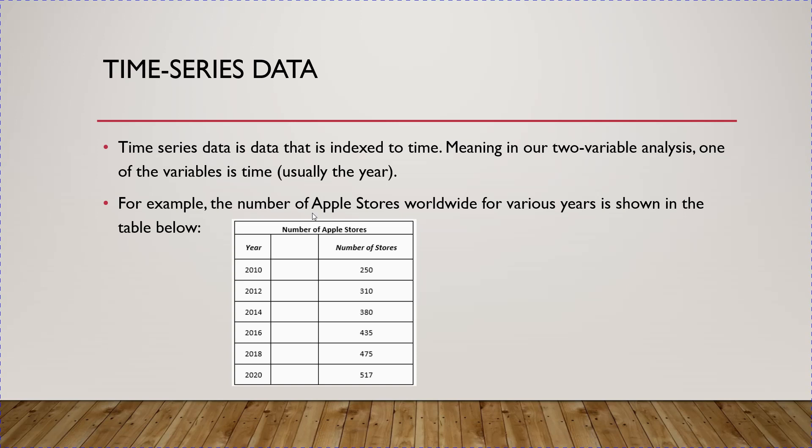For example, the number of Apple stores worldwide for various years is shown in the table. People generally guess thousands of stores worldwide, but it's not. Apple stores seem very ubiquitous here in the Northeast. But if you look at the data: in 2010 there were only 250 Apple stores worldwide; by 2012, 310; by 2014, 380; by 2016, 435; 2018, 475; and 2020, 517 Apple stores worldwide.